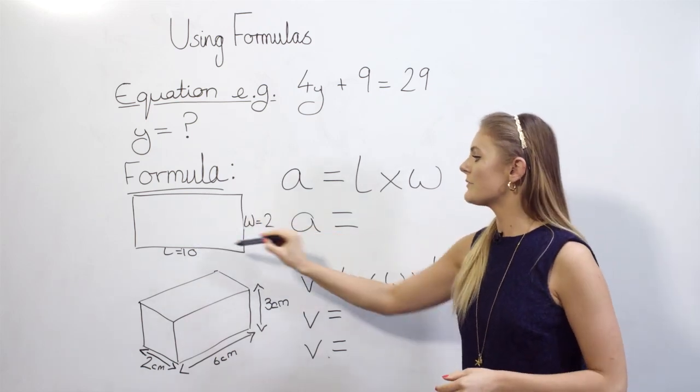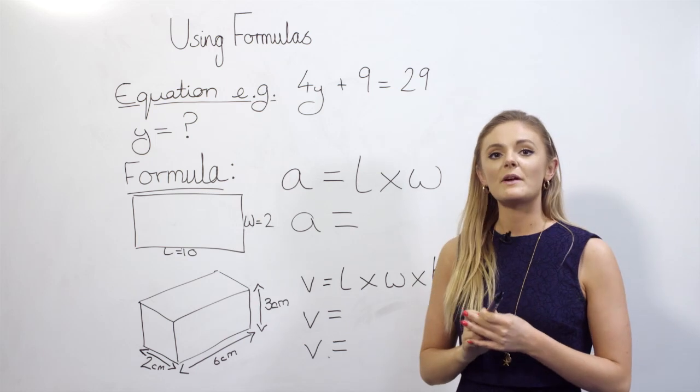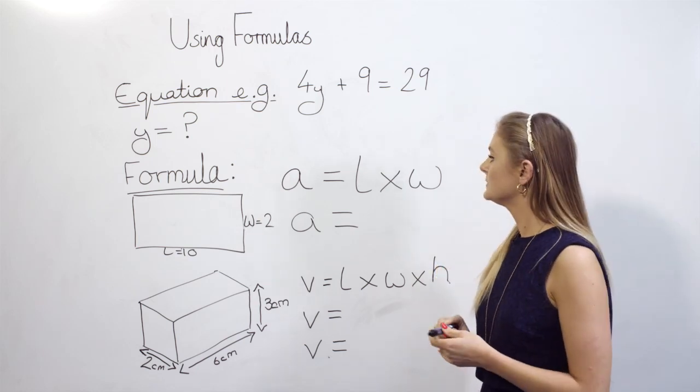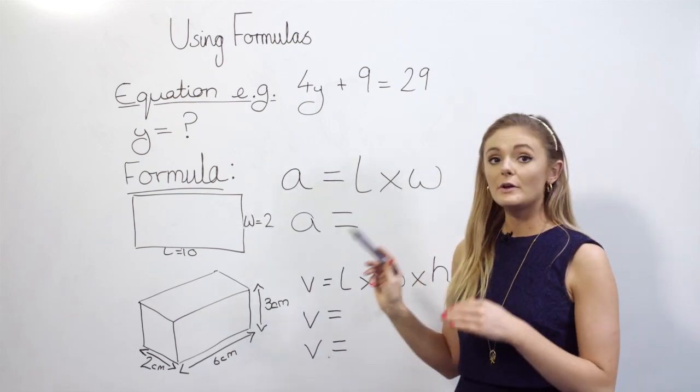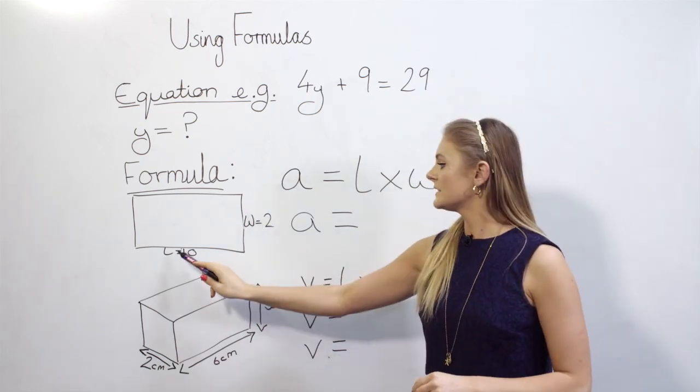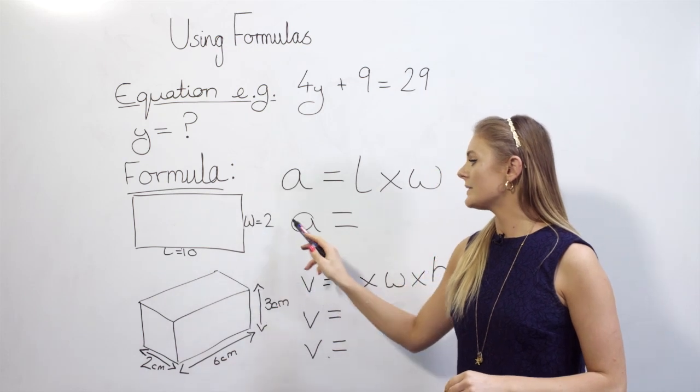So in this example, we have a rectangle. We want to figure out the area of the rectangle. We know that this is equal to the length times the width. Now we know the value of these two variables. The length is 10 and the width is 2.